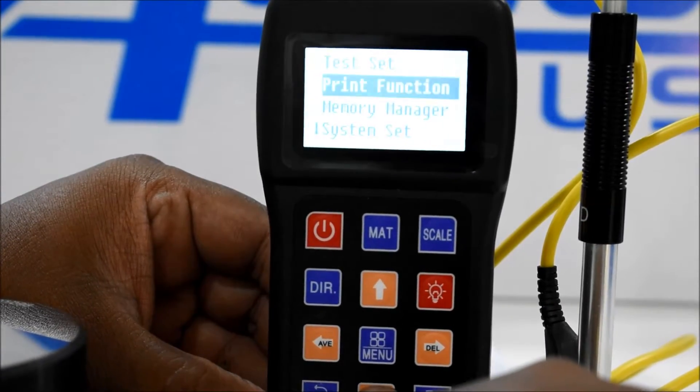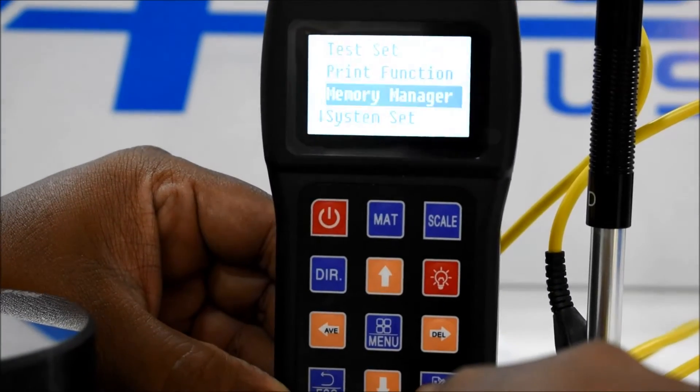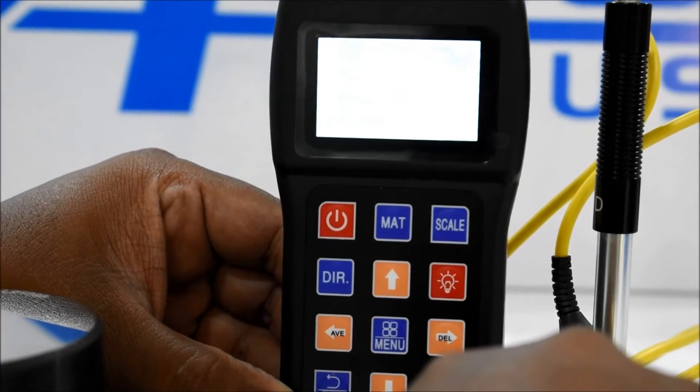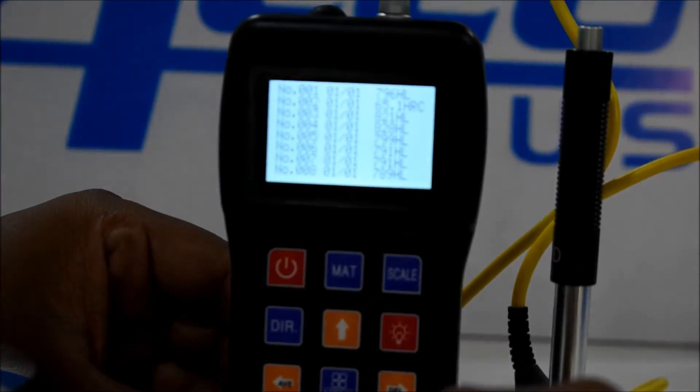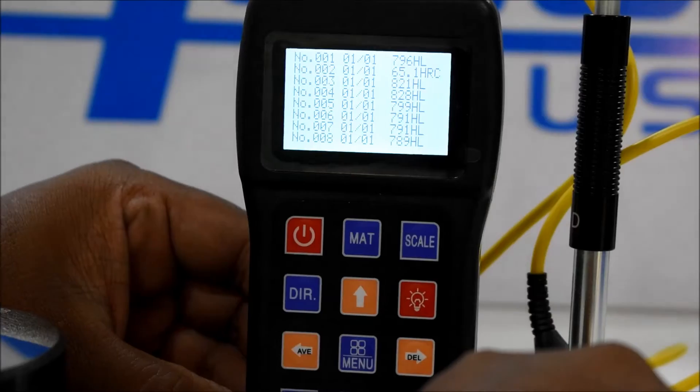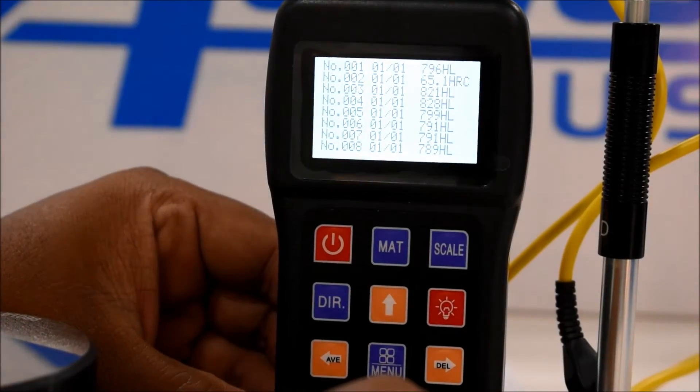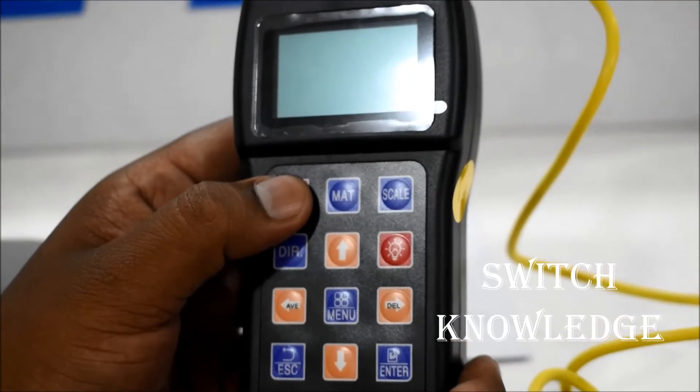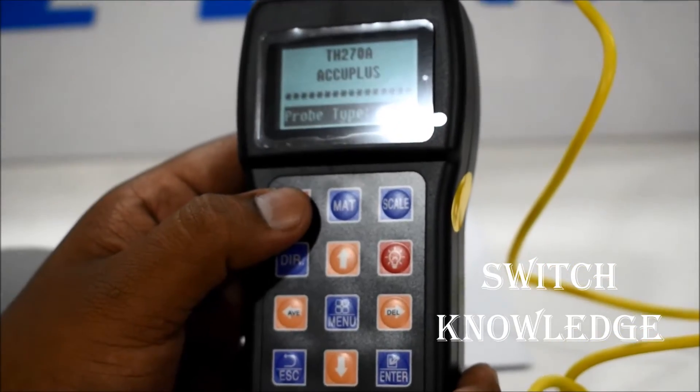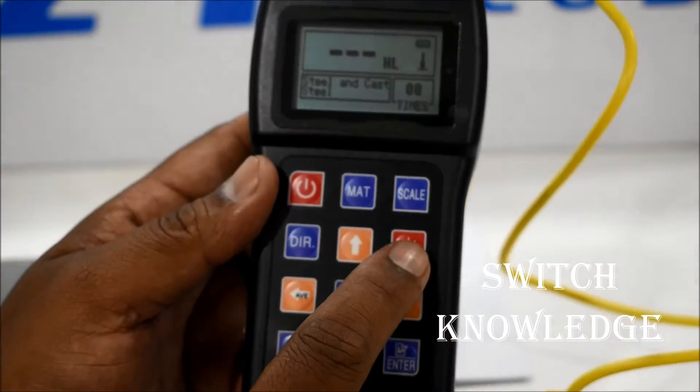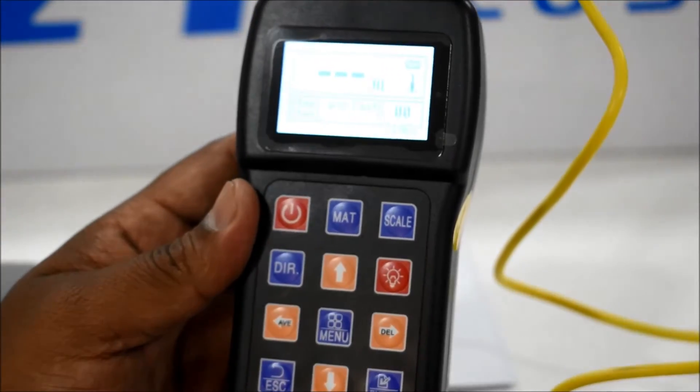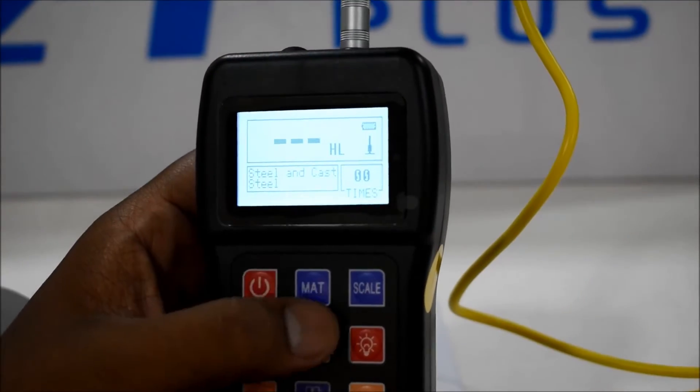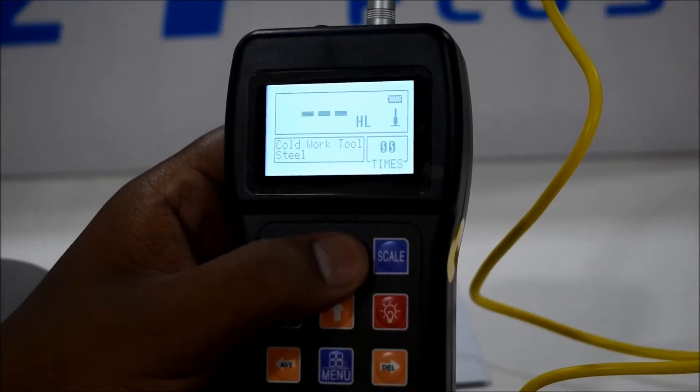Press menu, then memory manager, then view from single one or two. You get every reading here with scale. There's a guide of switches, an on button, and light option. Second is the material option.